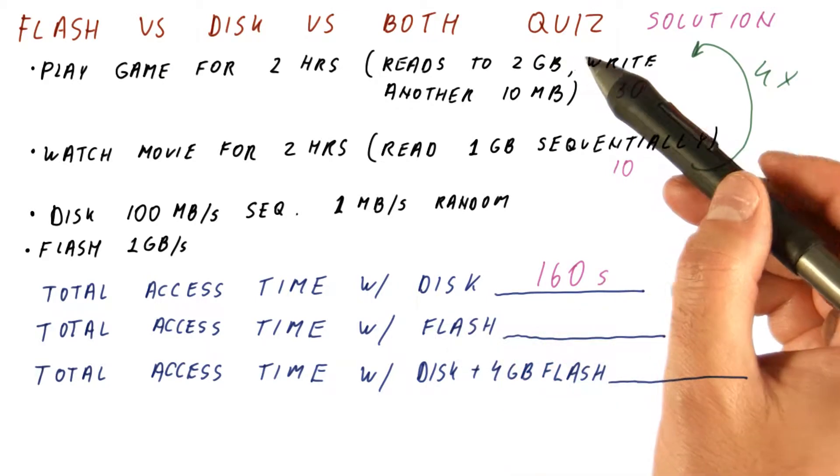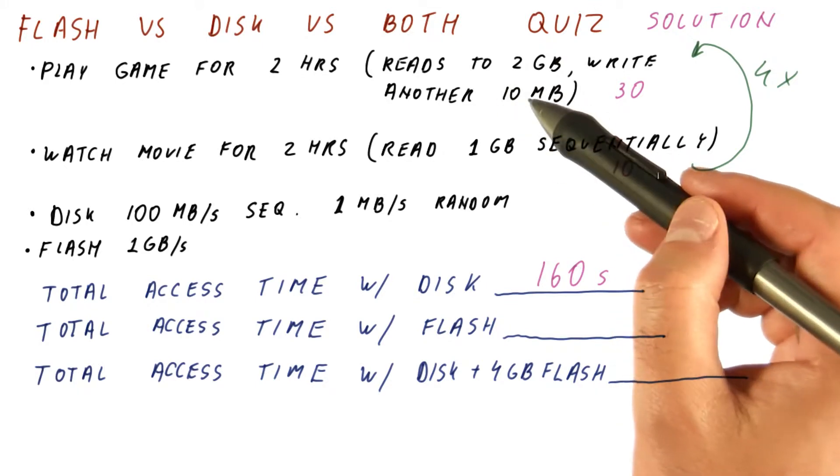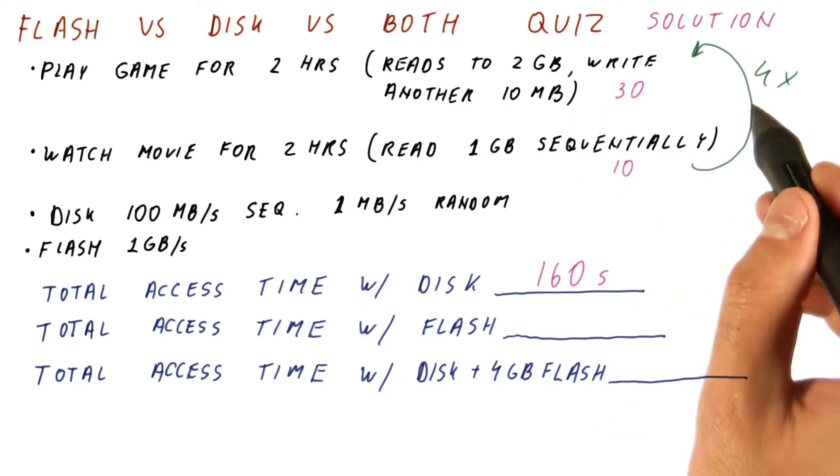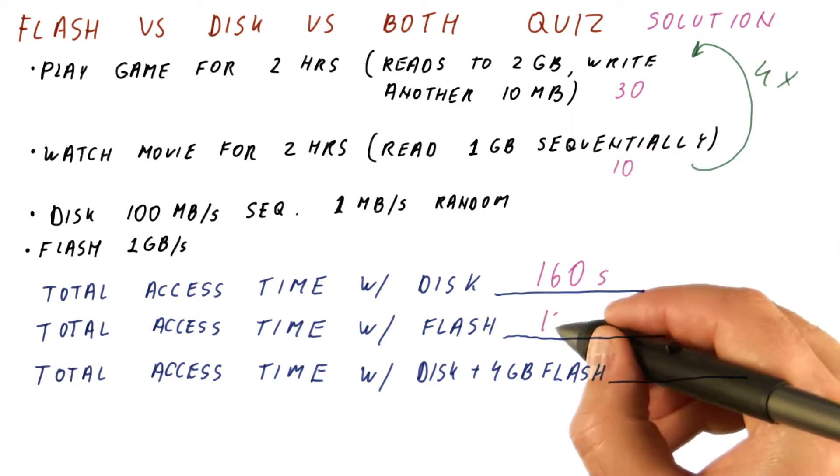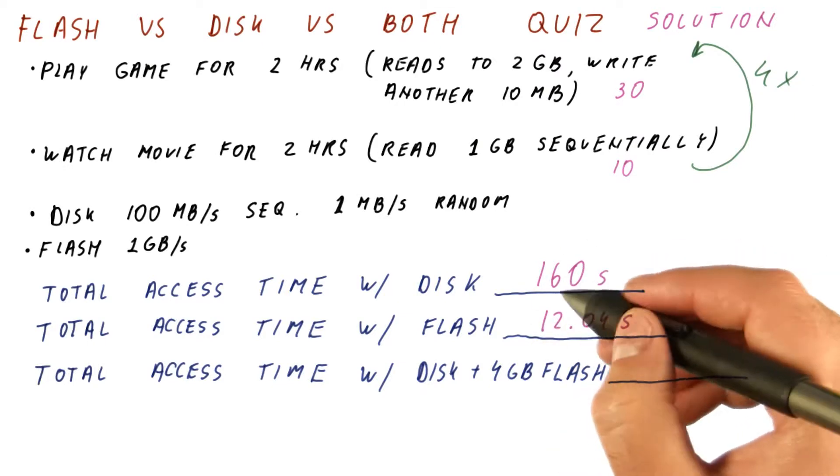With flash, we get 1 gigabyte per second. So we will get 2 seconds and change and another 1 second. So we get 3.01 seconds times 4. We get 12.04 seconds, which is way better than the disk.